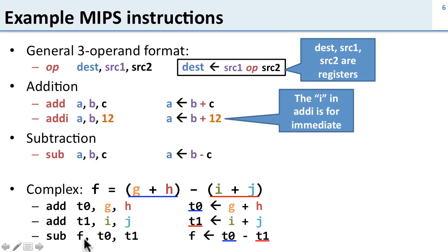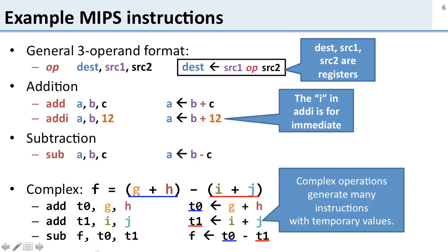So here's our last instruction. Subtract the two temporary values and stored into f. So when we have lots of complex operations we're going to get lots and lots of instructions and lots of temporary variables. And these temporary variables are stored in registers just like the source and destination so we need to make sure these all fit in our register file.